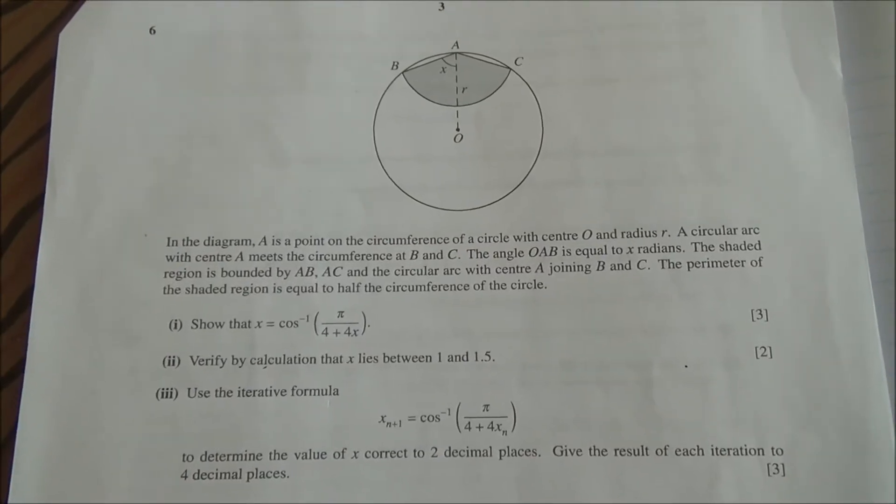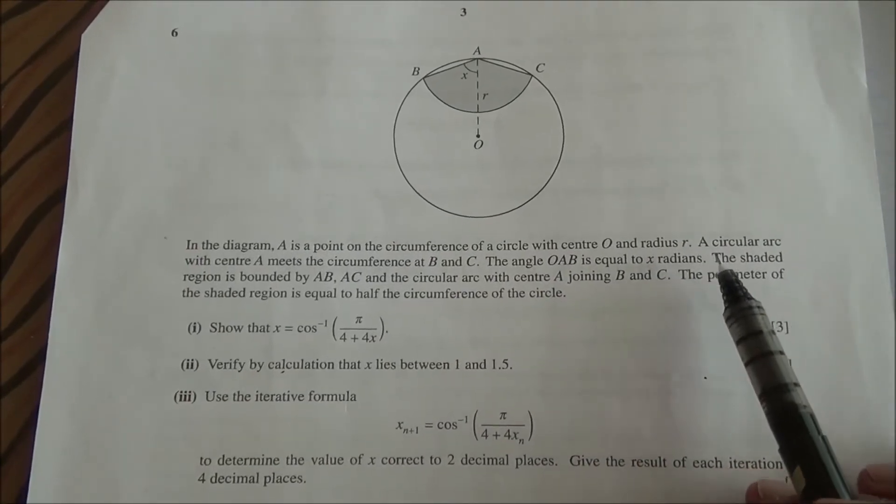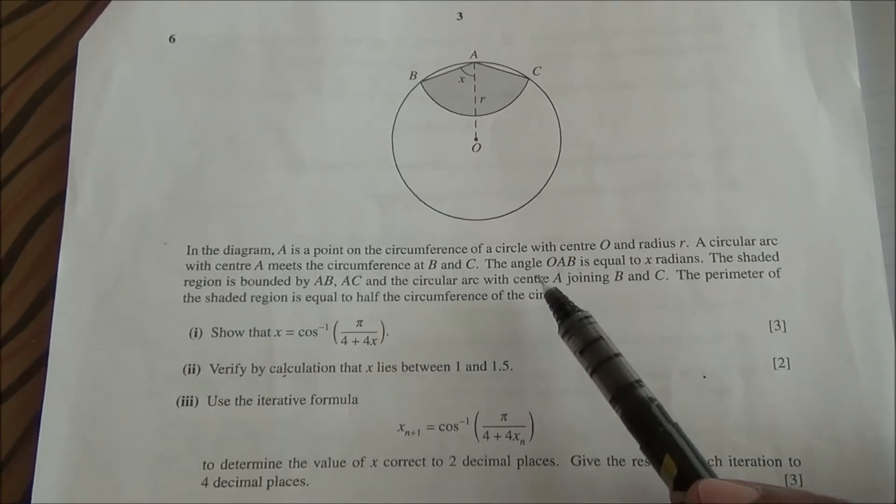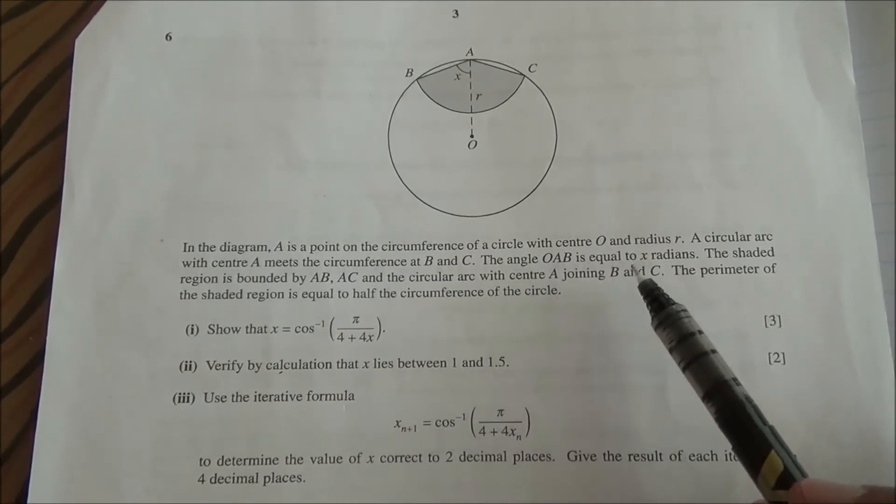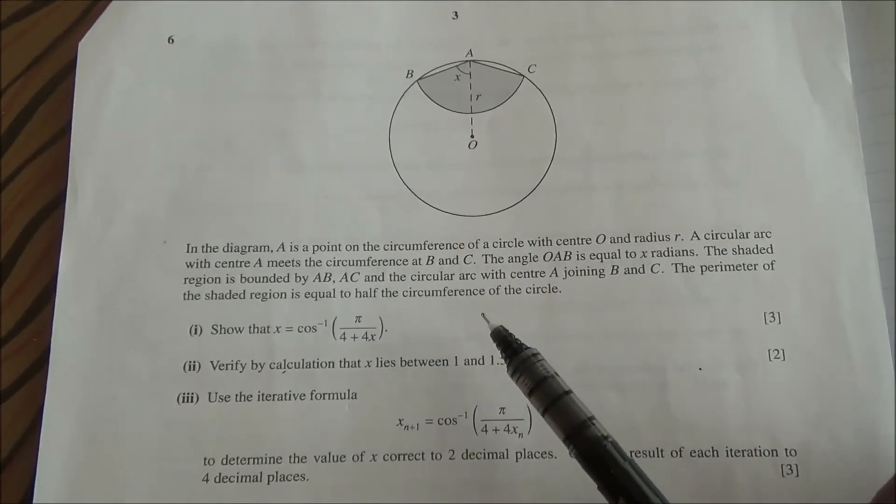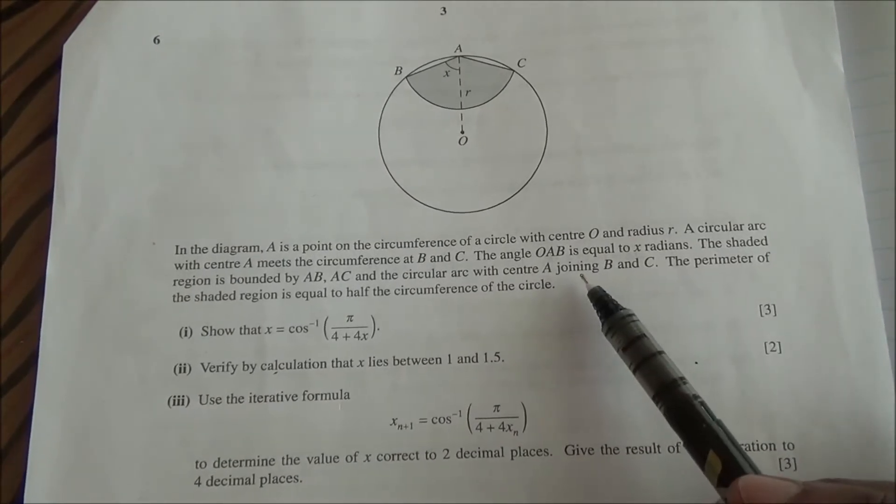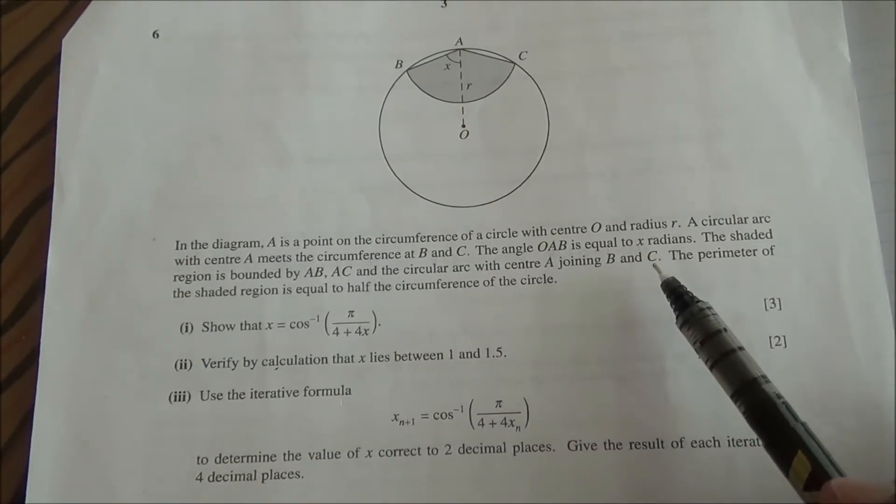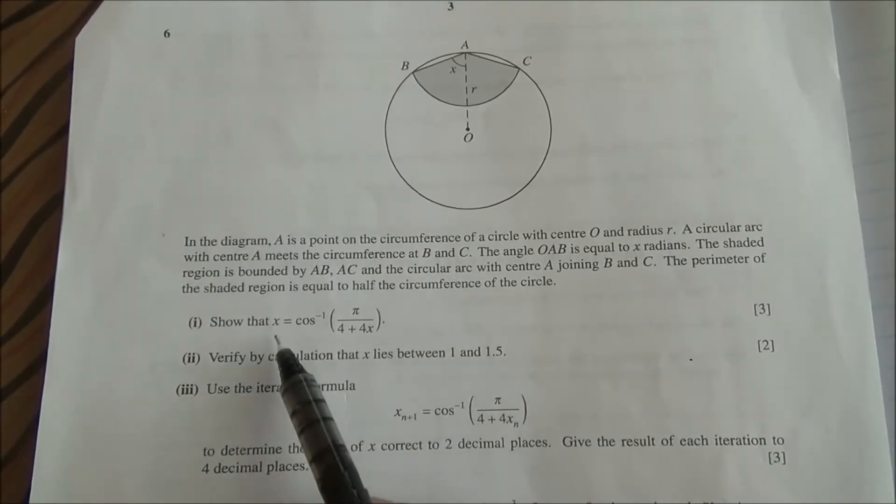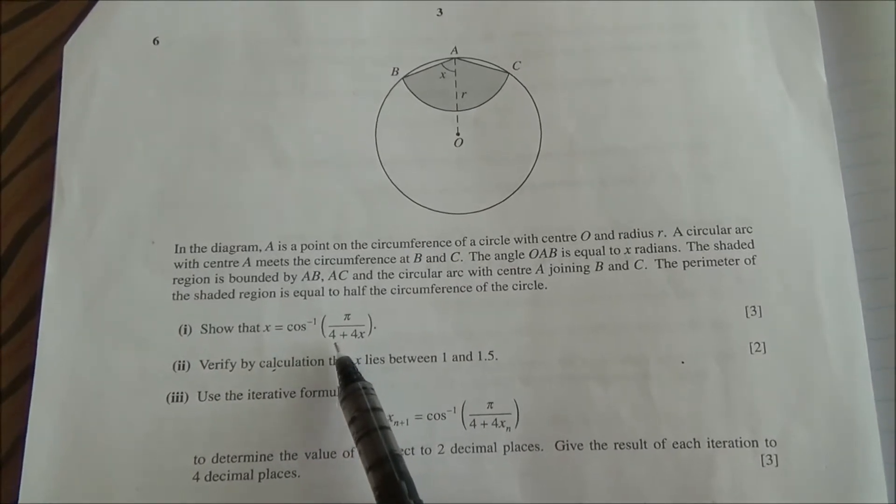In the diagram, A is a point on the circumference of a circle with center O and radius R. A circular arc with center A meets the circumference at B and C. The angle OAB is equal to X radians. The shaded region is bounded by AB, AC and the circular arc with center A joining B and C. The perimeter of the shaded region is equal to half of the circumference of the circle. We need to show that X is equal to cos inverse of π upon 4 plus 4X.